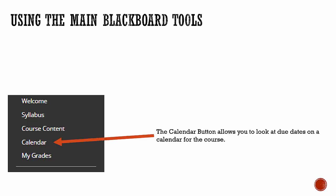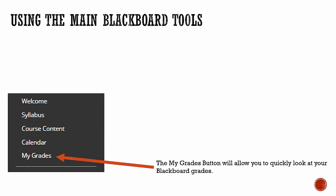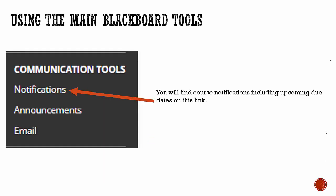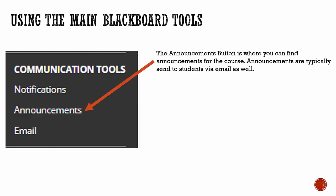The calendar button allows you to look at due dates on a calendar for the course. The My Grades button will allow you to quickly look at your Blackboard grades. The notification button is the home location of Blackboard when you enter — you will find course notifications including upcoming due dates on this link. The announcement button is where you can find announcements for the course; announcements are typically sent out to students via email as well.